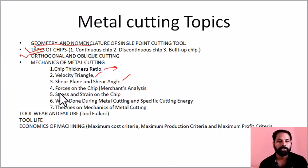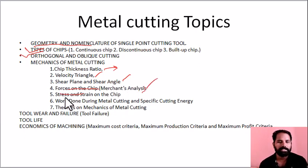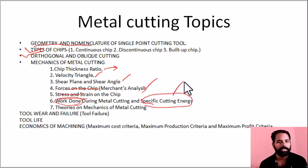Then we cover forces — a total of 6 forces: cutting force, thrust force, shear force, and friction force. After that, we look at shear stress and shear strain, followed by work done, cutting power, friction power, shear power, specific cutting energy, and material removal rate — which is important.